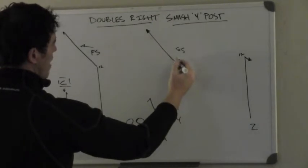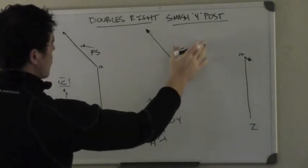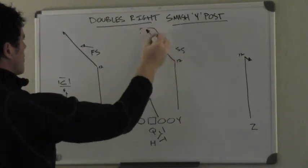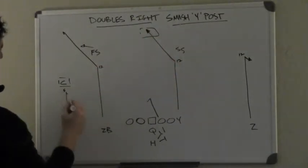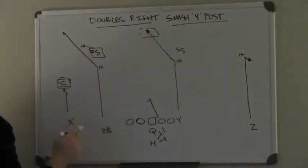The tight end is going to run up the field. He might even take one small step to the strong safety to keep him wide, and he's going to run right to the middle of the field to keep the free safety honest. The quarterback's keys are: number one, he's going to see the corner. Number two, he's got to see the free safety.